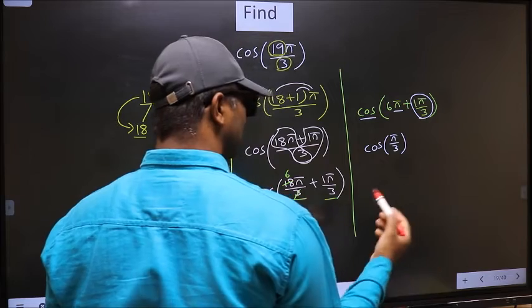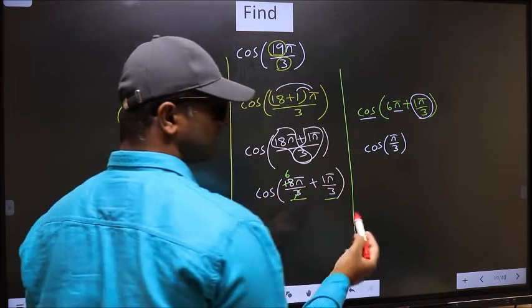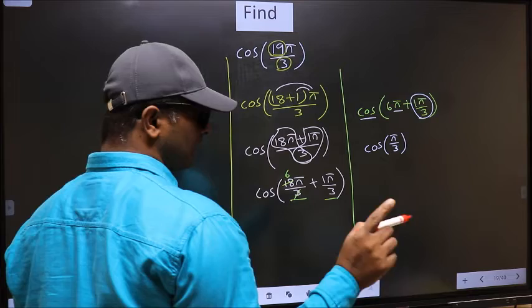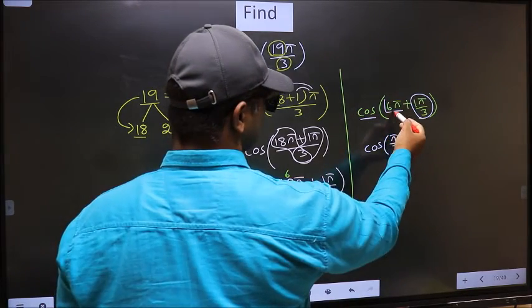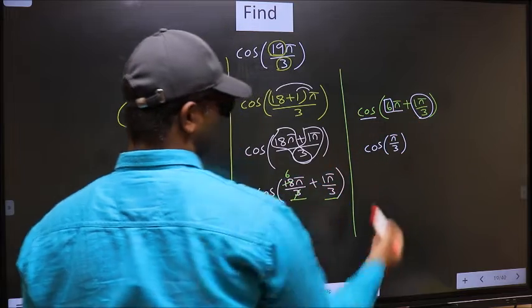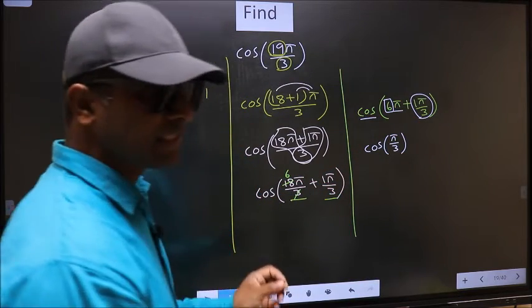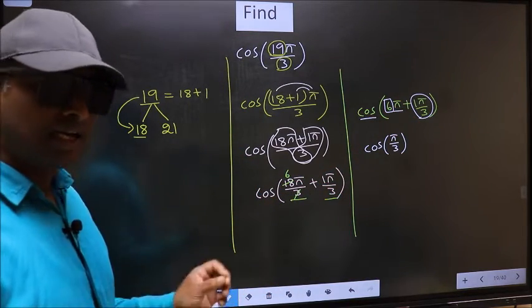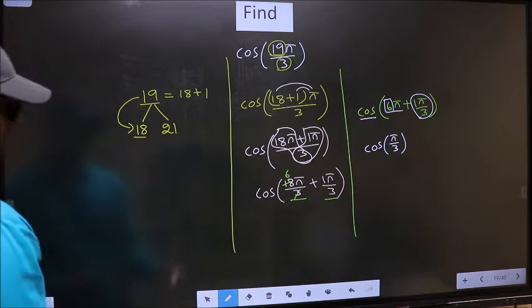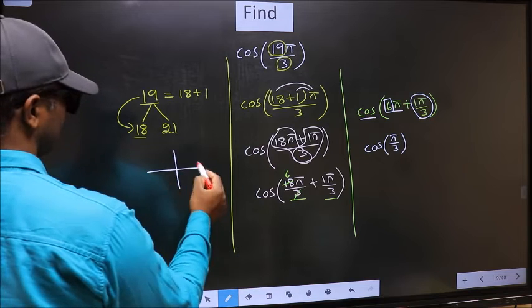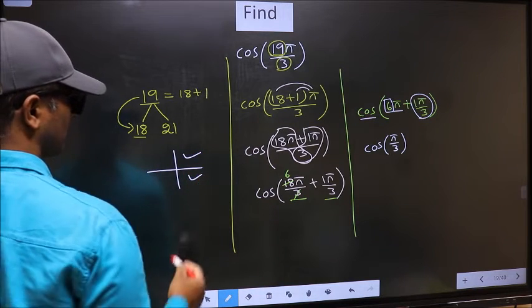Now the question is, will we get here plus or minus? To answer that, we should look at the number before π, which is 6. And 6 is even. And all the even multiples of π, they lie either in the first or in the fourth quadrant.